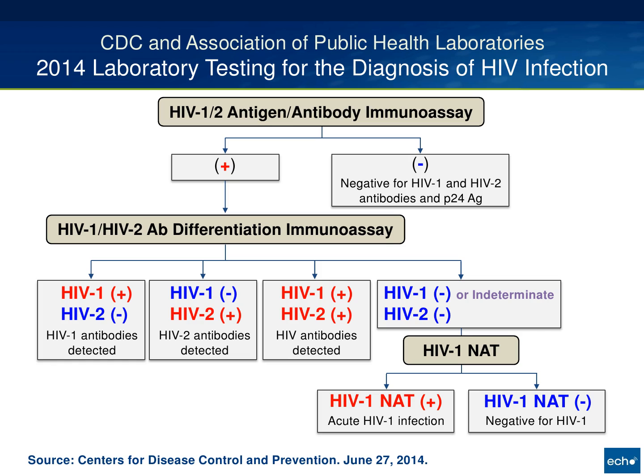The final test in this process is nucleic acid testing as a confirmatory test, and also as a tie breaker when you have a positive initial immunoassay and then a negative or indeterminate differentiation assay. That was the purpose for using the nucleic acid testing, and that's really the framework of where most laboratories are now.